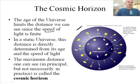In a static universe, this distance is directly determined from its age and the speed of light. So we can kind of say, how far can we actually see? One of the problems is the speed of light is only so fast. I mean, it's fast, but it's not only so fast. The maximum distance, the one we can see, is called the cosmic horizon. This is as far as we can see.